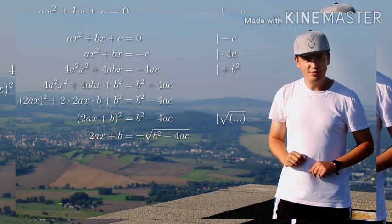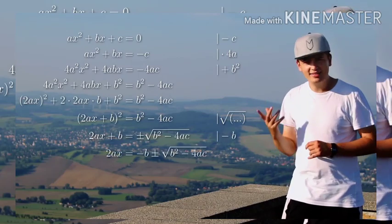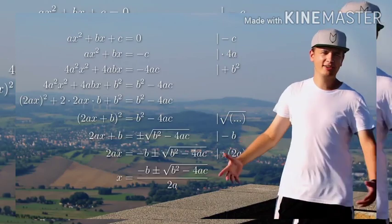And if you look to the left side, you know what will be next. Subtraction of b and division by 2a is giving us a formula for x.